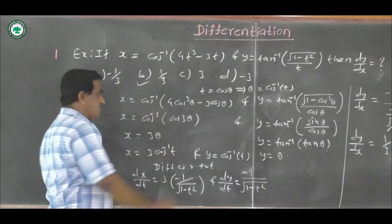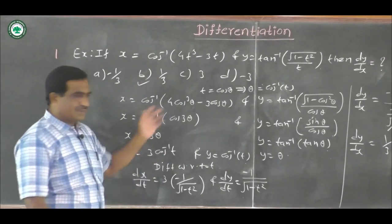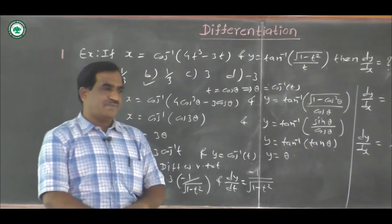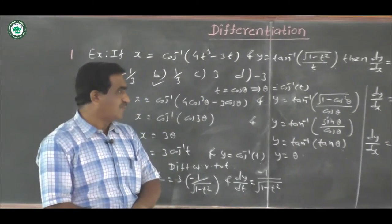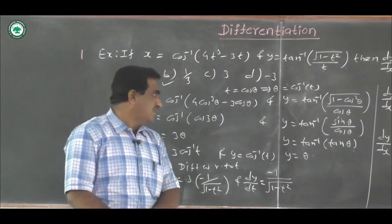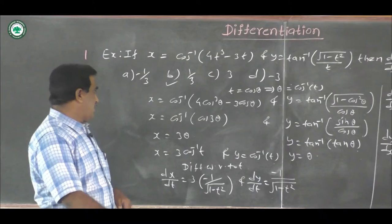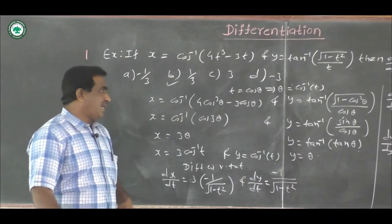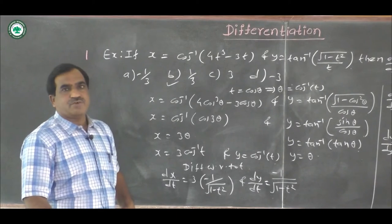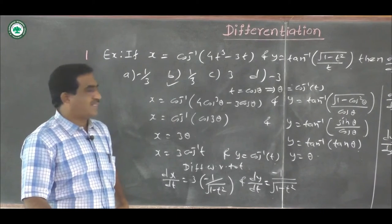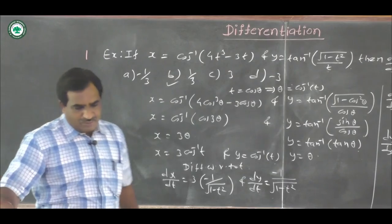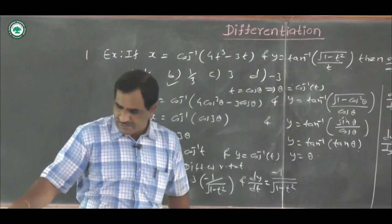The value for dy/dx is 1 by 3, therefore the correct answer is option b. You can solve this by simplifying first, finding derivatives for x and y, and then applying the parametric rule to find dy/dx.